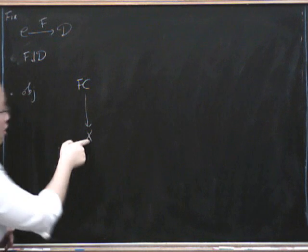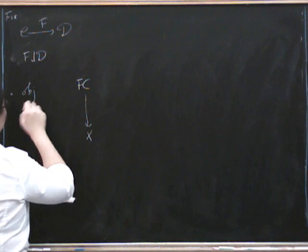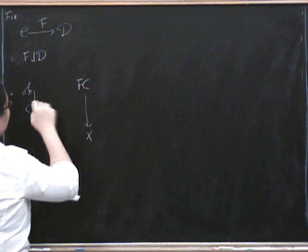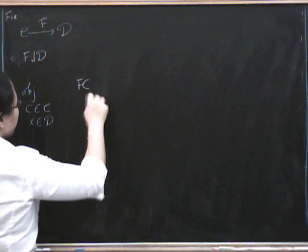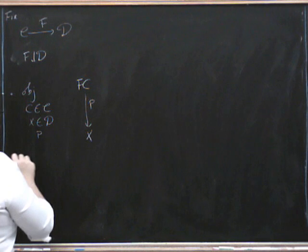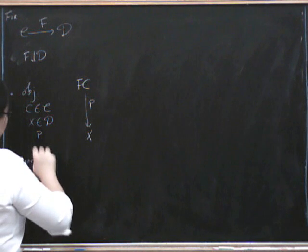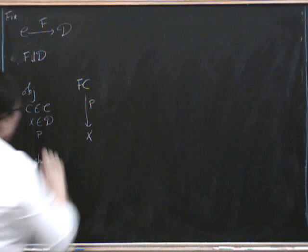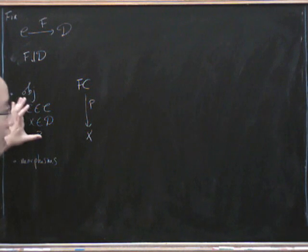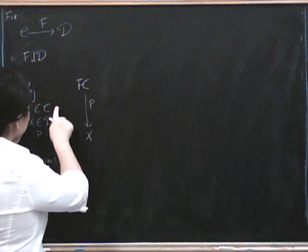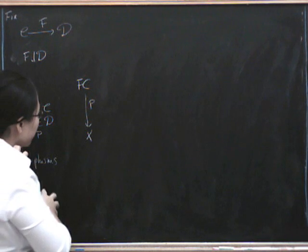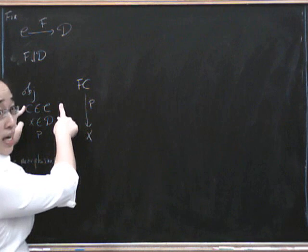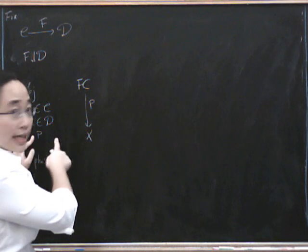So now the object is still going to look like this, except that our object X at the bottom isn't fixed anymore. So now the data is C in C, X in D, and the morphism P. So now what are morphisms going to be here? Well, if you look at the data for an object, it's an object here, an object here, and a morphism. So a morphism between them should be a morphism here, a morphism here, and a commuting condition.